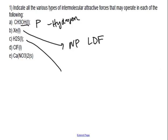H₂S: draw the Lewis dot and you see it looks like water. It's polar — but is it hydrogen bonding? No — sulfur is not N, O, or F. So it's dipole-dipole. ClF: two different things attached — it's polar. Also dipole-dipole.